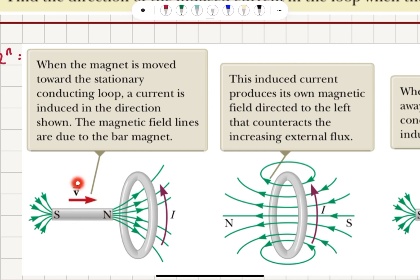If this bar magnet is approaching this loop, that implies that the magnetic flux pointing to the right is increasing. So there should be an induced current opposing this increasing flux. Using the right-hand rule, if the four fingers curl in the direction of this suggested current, the magnetic flux due to this induced current inside the loop will be pointing to the left, thereby opposing the increasing flux.